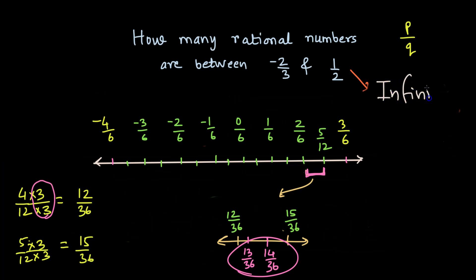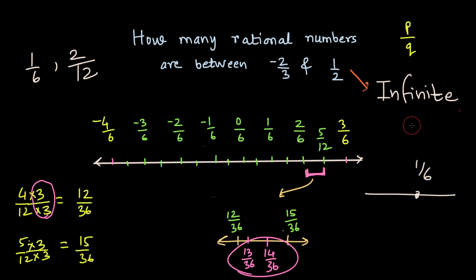Remember: between any two given distinct rational numbers — I say 'distinct' because 1/6 and 2/12 are the same fraction, representing a single point. The two rational numbers must be different. So there are infinitely many rational numbers between any two given distinct rational numbers.